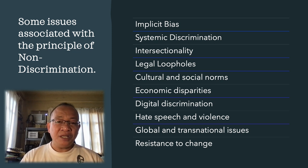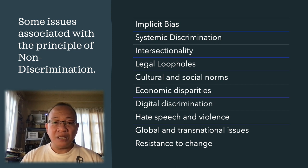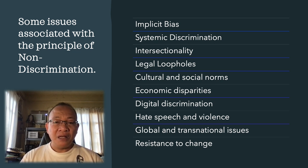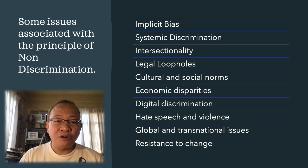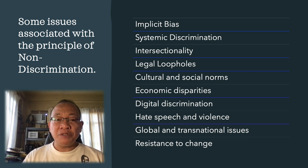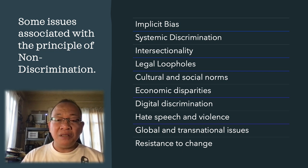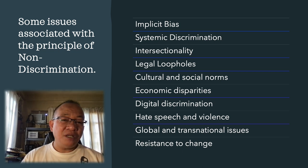Another issue is legal loopholes. Laws and policies aimed at preventing discrimination may contain loopholes or exemptions that allow for discriminatory practices to persist. Additionally, enforcement mechanisms may be weak or ineffective, limiting the ability to address discrimination effectively. Number five, we also have cultural and social norms. Cultural attitudes and social norms can reinforce discriminatory behavior and beliefs. These norms may perpetuate stereotypes, stigmatize certain groups, and discourage diversity and inclusion. Then we have economic disparities. Economic inequality can exacerbate discrimination, as marginalized groups may have limited access to resources, opportunities, and social mobility.